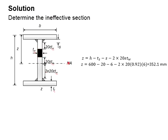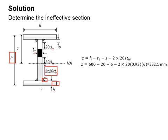This ineffective region is assumed not to contribute to the bending resistance of the member. With that, you need to determine an effective neutral axis, represented by Z. From the diagram, Z is calculated by taking the overall height H, minus the flange thickness, minus the weld thickness, minus 2 times 20 epsilon t_w. For this example, Z equals 352.1 mm.